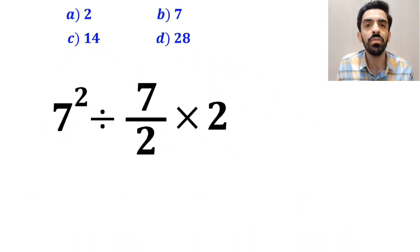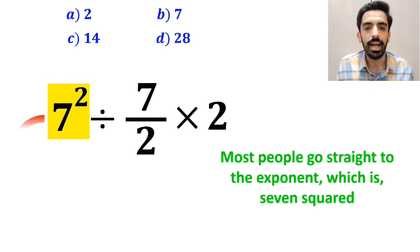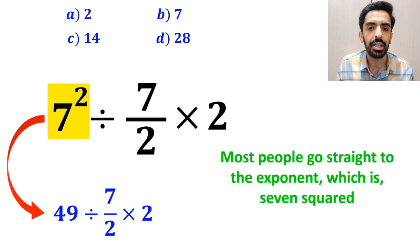And the first step to solve this question, most people go straight to the exponent, which is 7 squared, and rewrite this expression as 49 divided by 7 over 2 multiplied by 2.